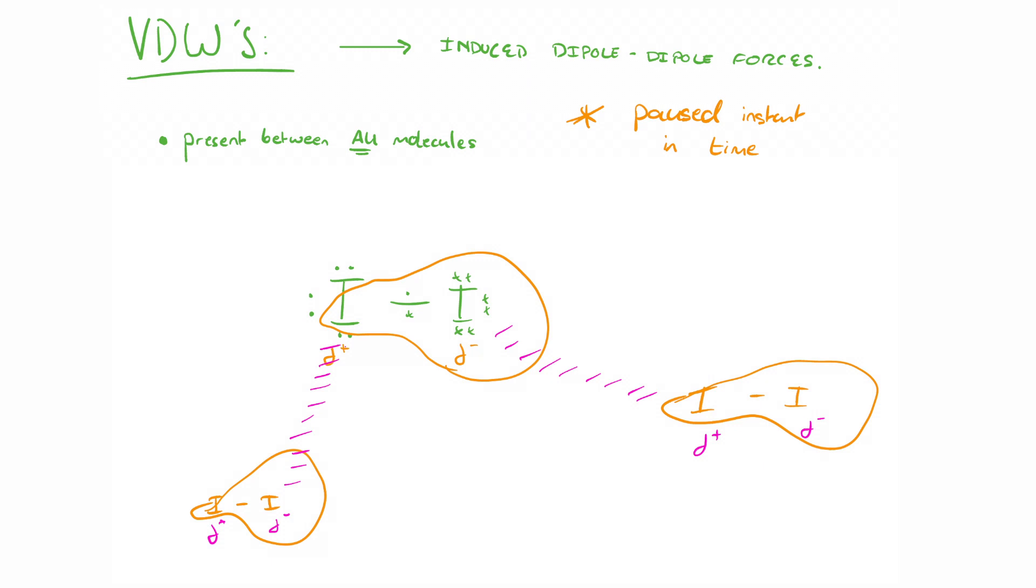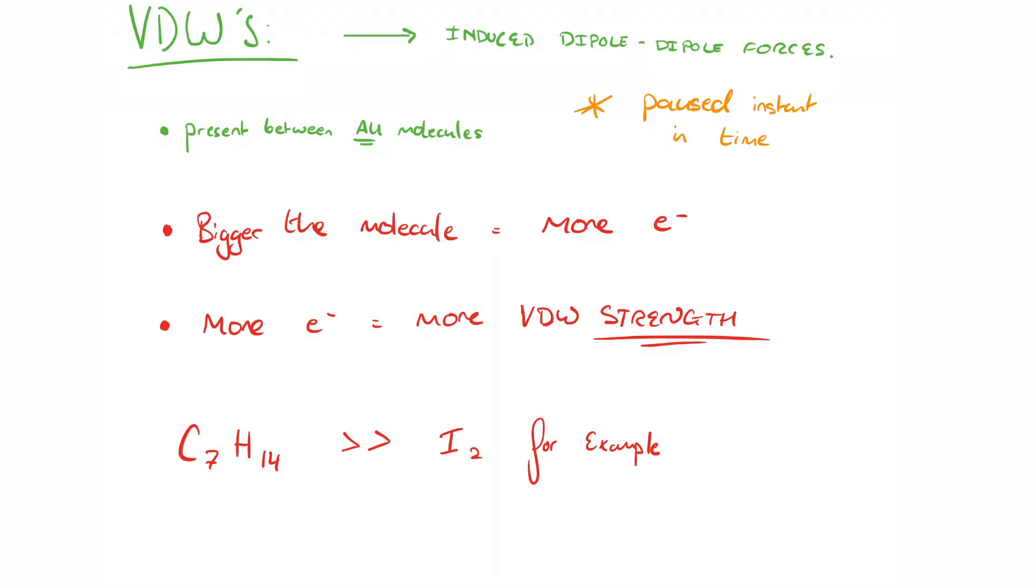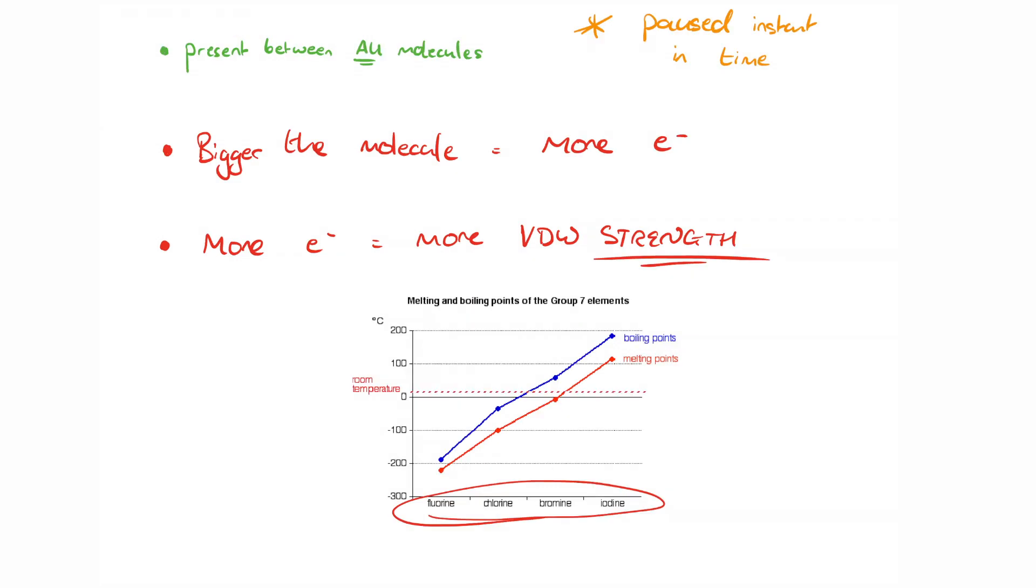So what's important about van der Waals forces is that the bigger the molecule gets, the more electrons there are. So therefore, the bigger the van der Waals force of attraction is. This graph I've just whacked on the screen shows the trend in melting and boiling point as you go down group seven.